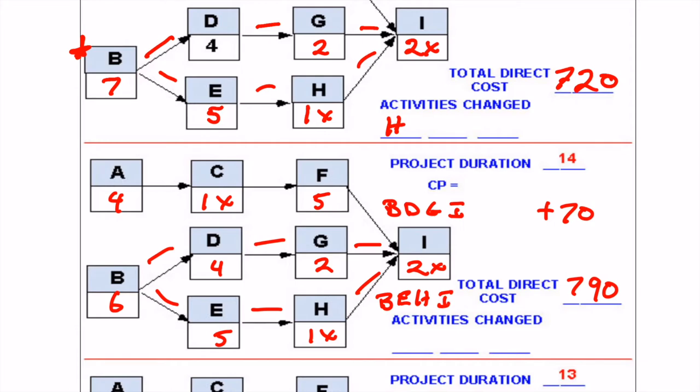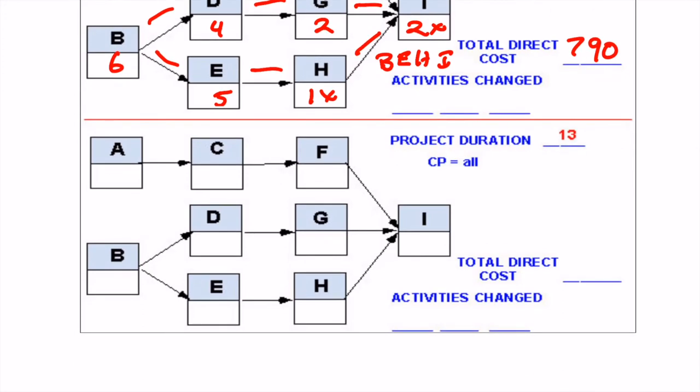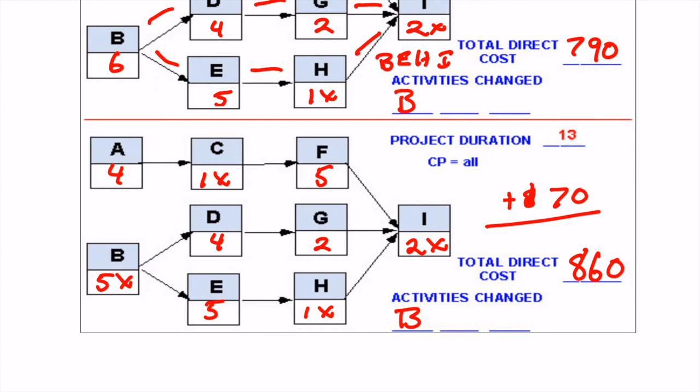So we have the same situation again. So what we're going to do is we're going to crash B again. Because we have these two paths here, once again we're in the same situation. If we crash E, we would have to do D or G to go along with it. So we're going to go ahead and do B one more time. So that gets us down to 5X with B. We're now going to add another $70 to our total here. It's going to get us down to $860 because we changed B again.